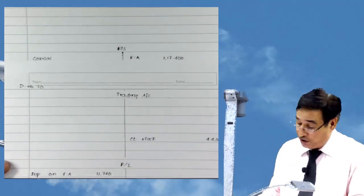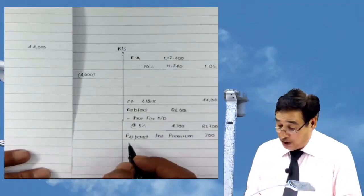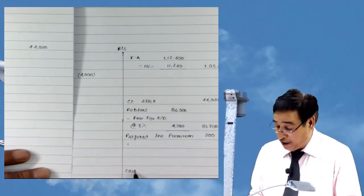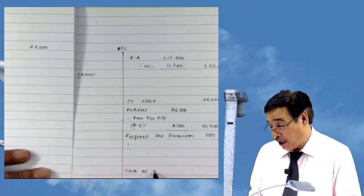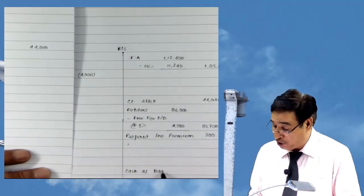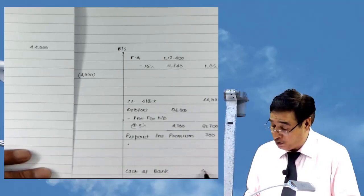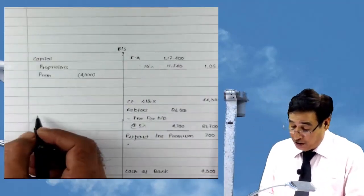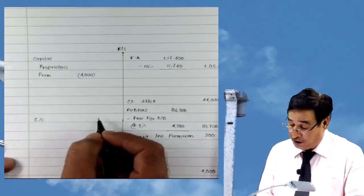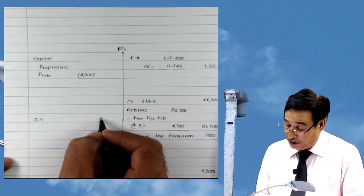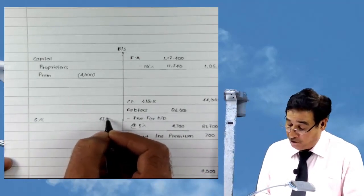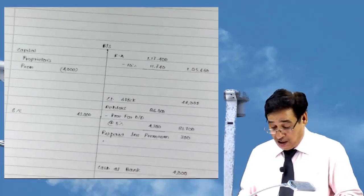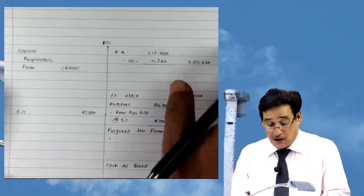First item is cash at bank — we will write it over here: cash at bank 4,000. Next item is sundry debtors and then sundry creditors — S/C means sundry creditors, don't get confused. I will have to use the short form as I have to do lots of questions in class. In the examination you write the full form.